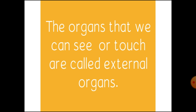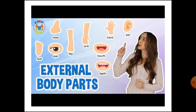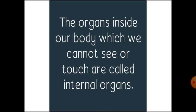The organs that we can see or touch are called external organs. We can see or touch our external organs like foot, nose, eyes, leg, arm, hand, ear, mouth, teeth — these all are called external organs.